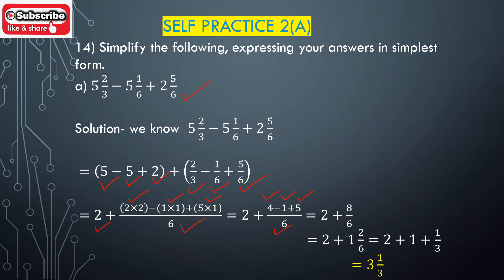4 minus 1 is 3, and 3 plus 5 is 8, so the fractional part gives 8/6. The whole number part is 2. Now we have 2 plus 8/6, and we need to add these together.